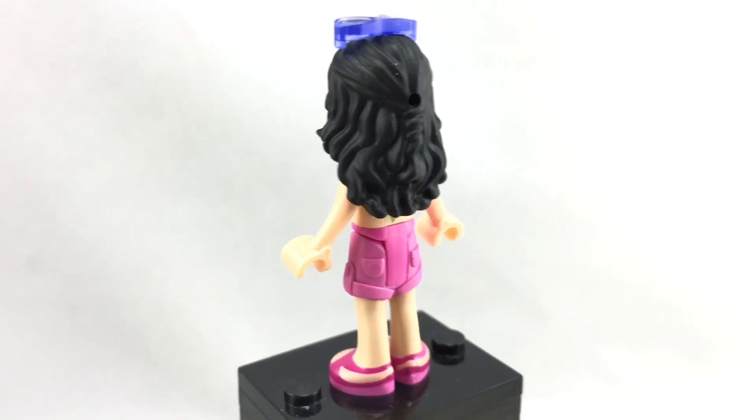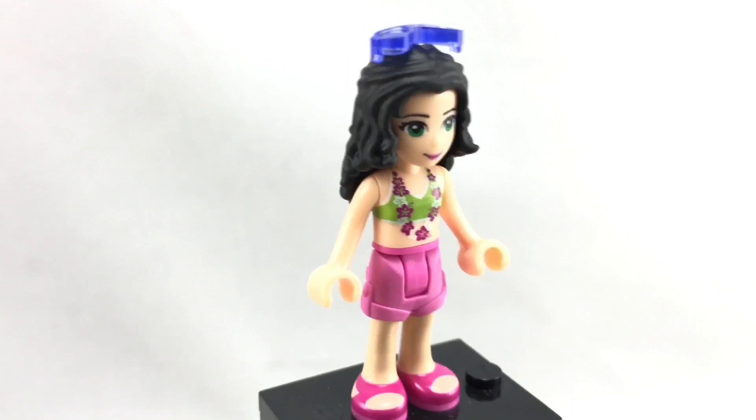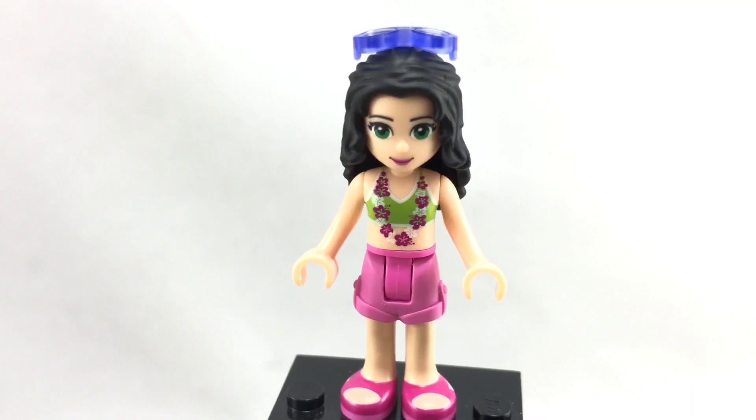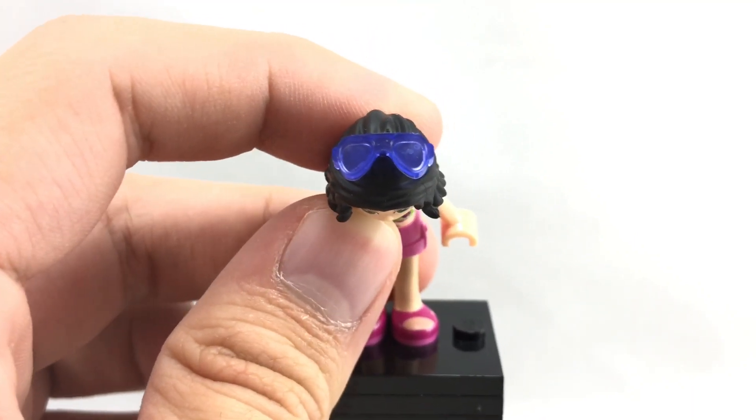Now the design for the hair is the same one they've been using since 2012, that classic Friends hairstyle. That's 5 years, holy crap. And she does have sunglasses at the top which you can see are a nice translucent purple.